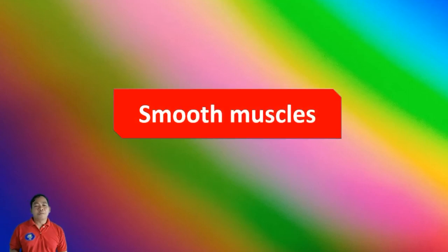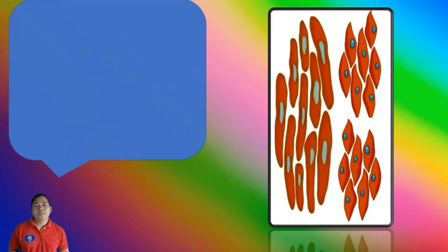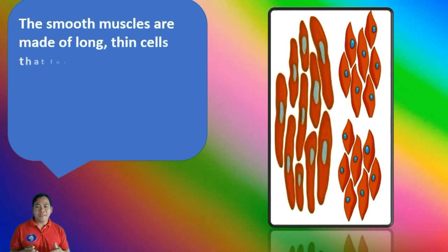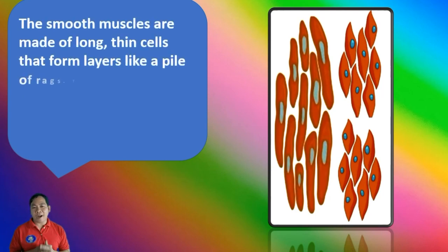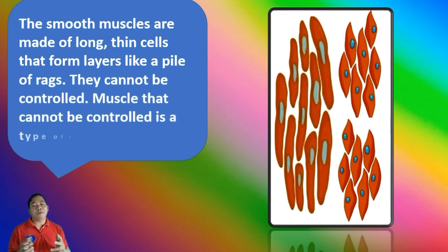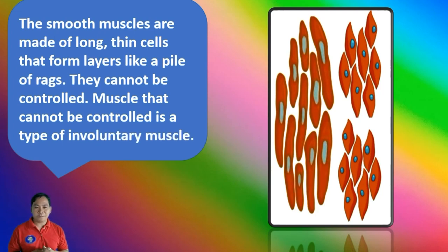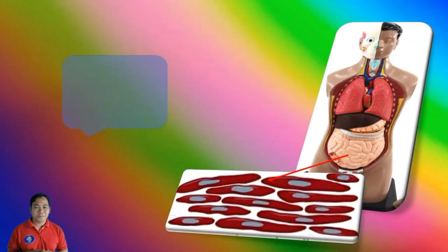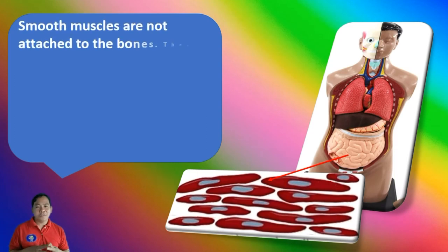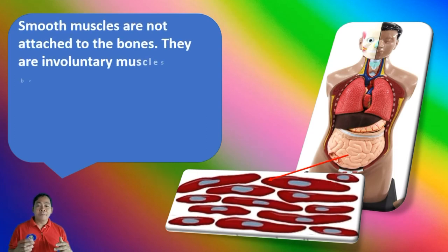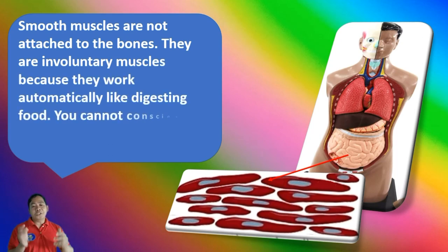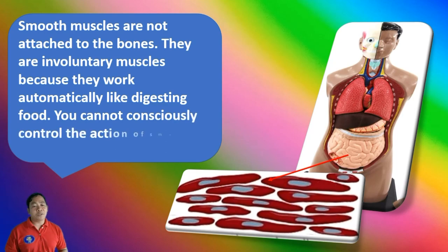The smooth muscles are made of long thin cells that form layers. They cannot be consciously controlled, making them a type of involuntary muscle. Smooth muscles are not attached to the bones. They work automatically — like when digesting food — and you cannot consciously control their action.